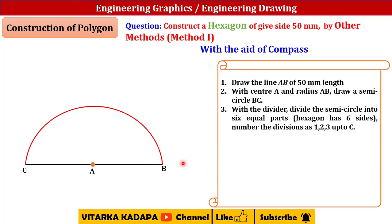So with the help of a divider, divide this semicircle into six equal parts. Our objective is to draw a hexagon, so this semicircle now we have to divide into six equal parts. If your objective is to draw a pentagon, divide this semicircle into five equal parts. But now we are going to draw a hexagon.